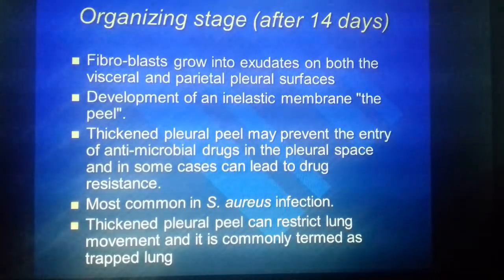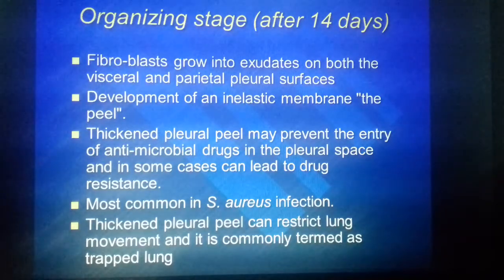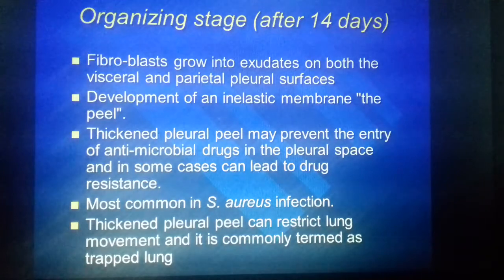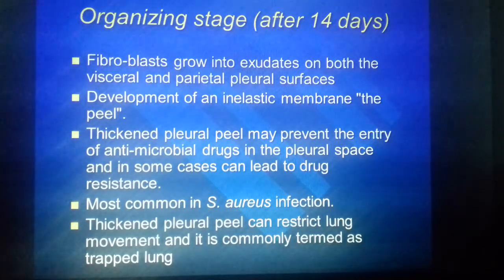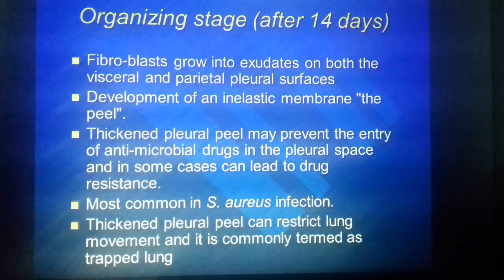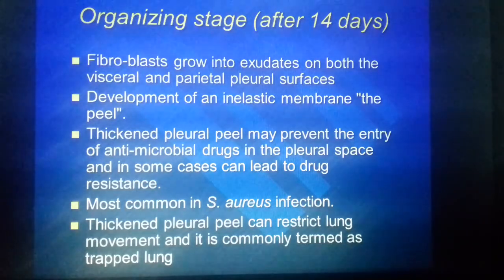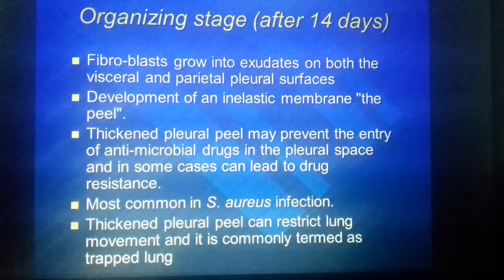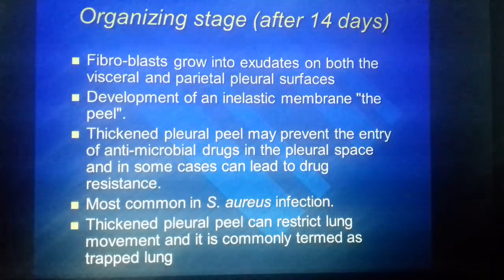The third stage is the organizing stage. Fibroblasts grow into the exudates on both visceral and parietal surfaces, leading to development of an inelastic membrane called the peel. The thickened pleural peel may prevent the entry of antimicrobial drugs into the pleural space and in some cases can lead to drug resistance. It can also restrict lung development, commonly termed as trapped lung.